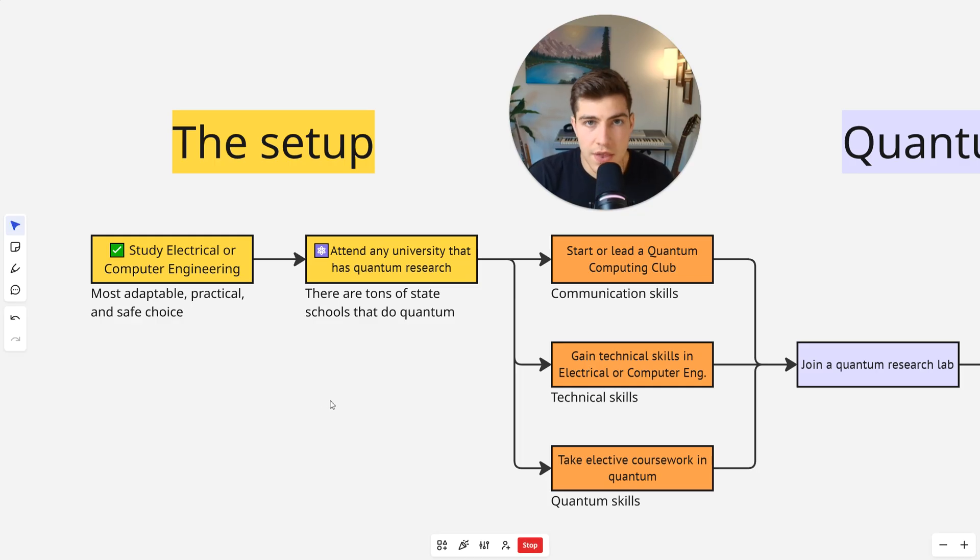Next, you're going to want to attend a university that has quantum research, and there's actually tons of universities out there right now that have quantum research, and they're not just Ivy Leagues. There's honestly a lot of really great state schools that are inexpensive and are pretty good schools with lots of opportunity that do quantum research. So if you are not attending a university that has quantum research, you should transfer. And if you are applying right now, you should apply for ones that only have quantum research programs. Okay, that's the setup.